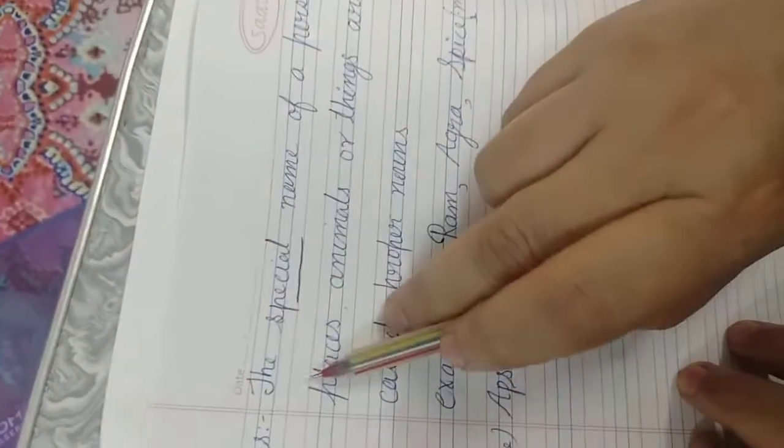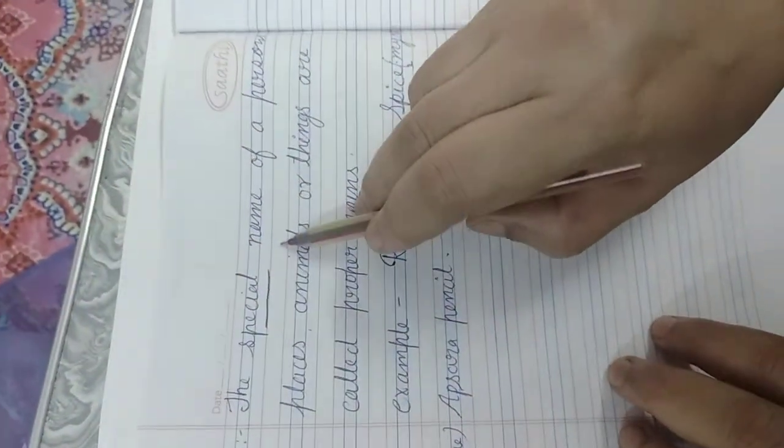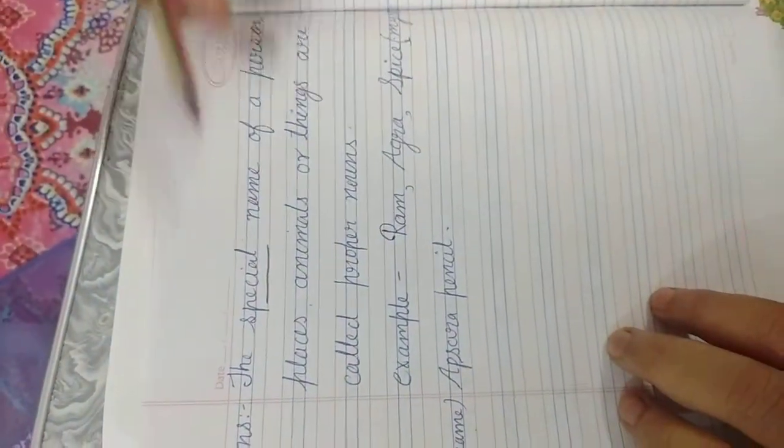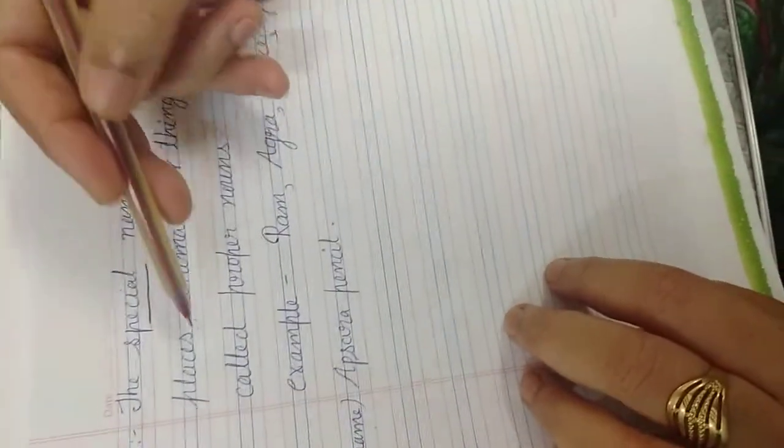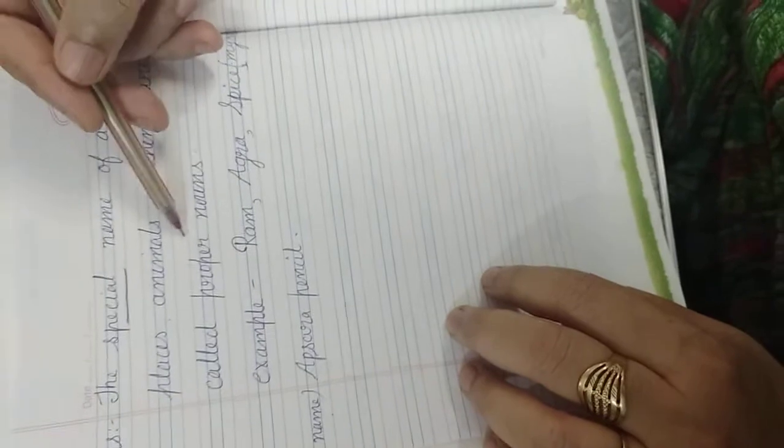Write the definition of proper noun. The special name of a person, place, animal, or thing is called a proper noun.